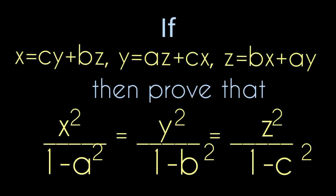If x equals to cy plus bz, y equals to az plus cx, and z equals to bx plus ay, then prove that x square by 1 minus a square equals to y square by 1 minus b square equals to z square by 1 minus c square.